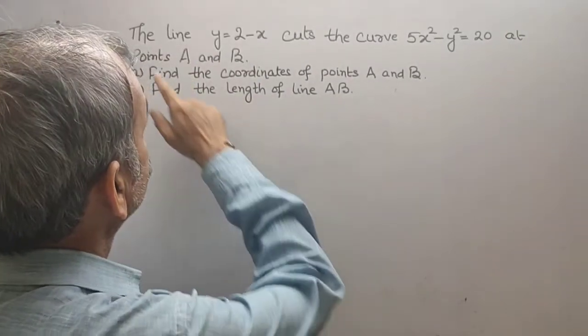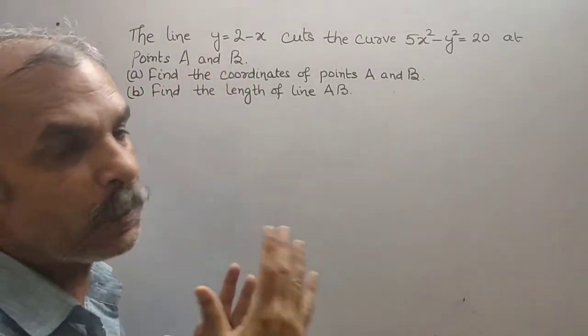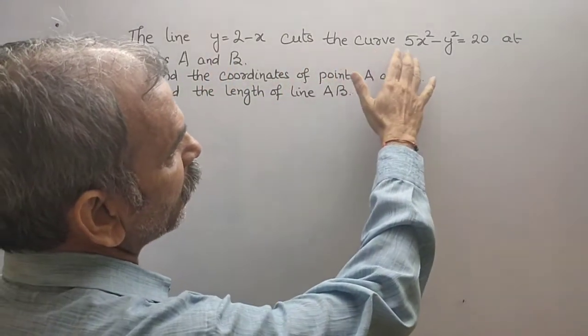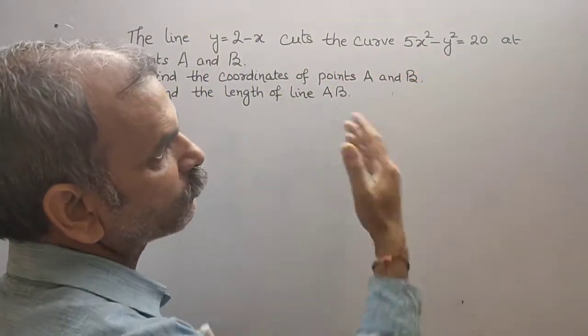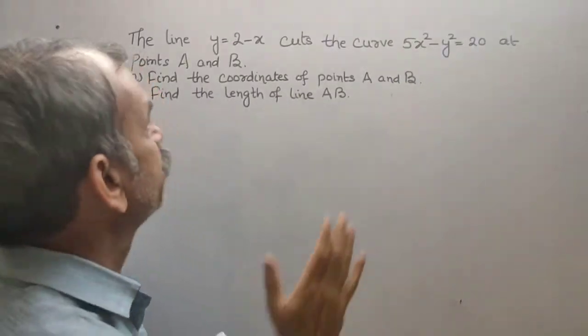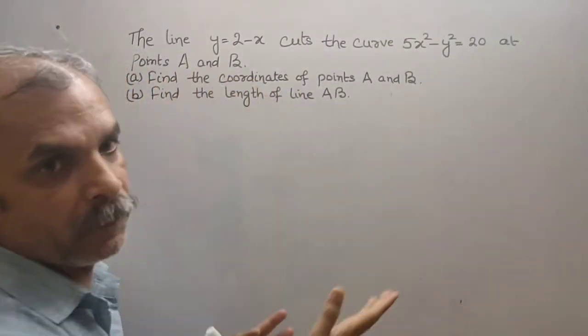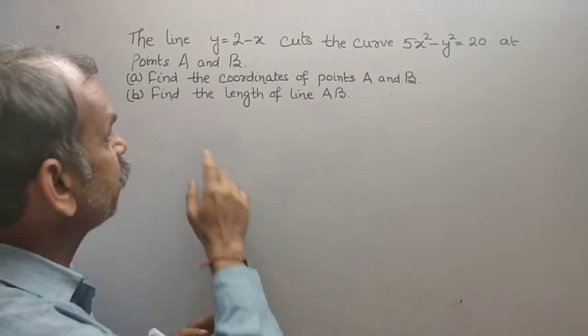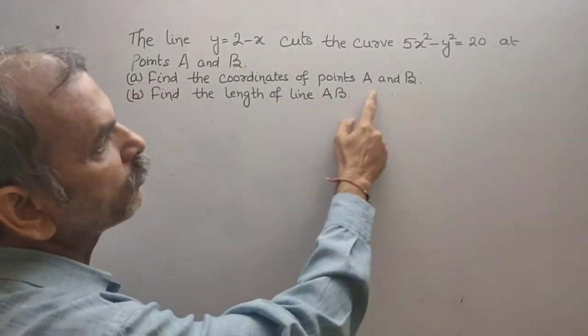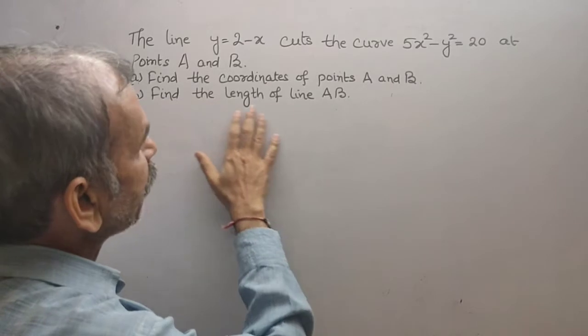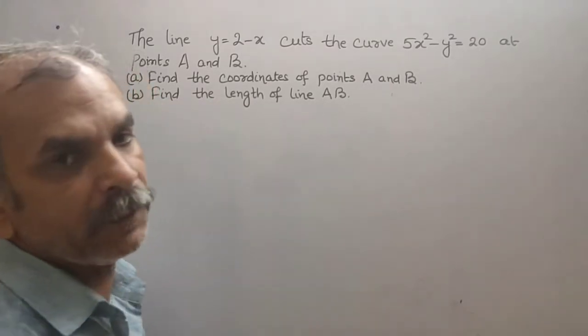Your question is: the line y = 2 - x cuts the curve 5x² - y² = 20 at points A and B. What they have given? Find the coordinates of points A and B, and find the length of the line AB.